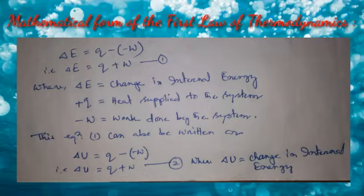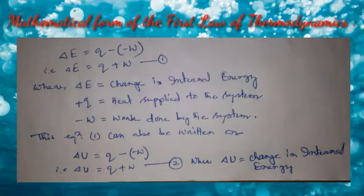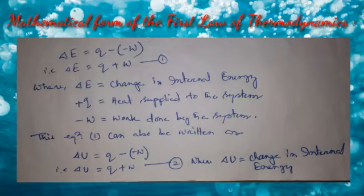Do not confuse it. Equation 1 is the mathematical form of the first law of thermodynamics: ΔE = Q + W. This equation can also be written as ΔU = Q − (−W), which after simplification also becomes ΔU = Q + W. Internal energy is symbolized by capital E or capital U. You can use either equation 1 or equation 2.